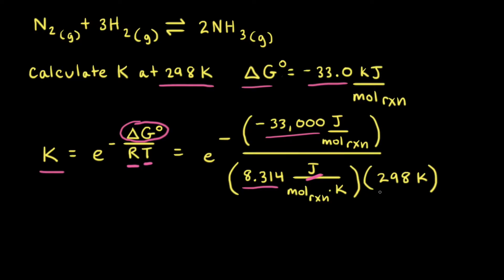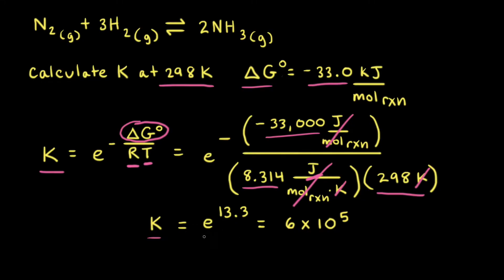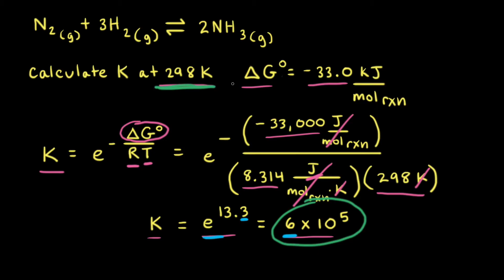Once we plug in our temperature of 298 Kelvin, notice how Kelvin cancels out, and joules per mole of reaction cancels out. When we do the math, we find that the equilibrium constant K equals E to the 13.3 power, which equals 6 × 10⁵. Equilibrium constants don't have units. When E is raised to a power, the result has the same number of significant figures as there are decimal places in the power — here one decimal place gives one significant figure. Since K is much greater than one at 298 Kelvin, there is a lot more ammonia than nitrogen or hydrogen at equilibrium.